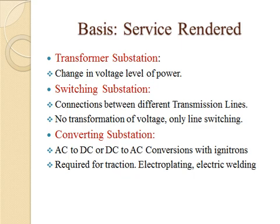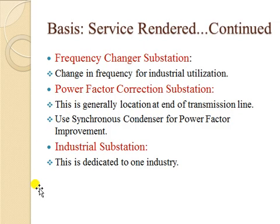There are also substations called converting substations. Typical equipment like ignitrons are present in these substations, and they change the system nature of supply from AC to DC and DC to AC. These kinds of operations are required for traction such as railway systems, electroplating applications, or electrical welding. This is classification on the basis of service rendered.